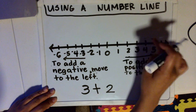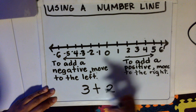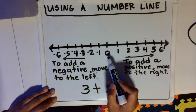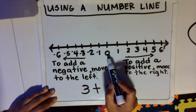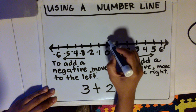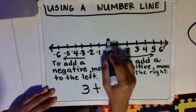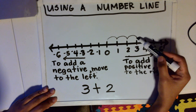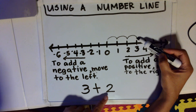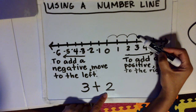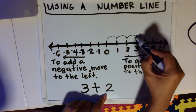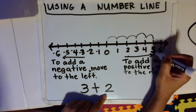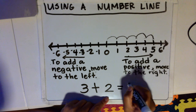You can also show it like this. From zero, you move to three, because zero is the origin or the starting point. So from zero, I'm going to move to three: one, two, three. From here, I'm going to add two more steps, and those steps would be going to the right: one, two. So the final answer is five. Three plus two is equal to five.